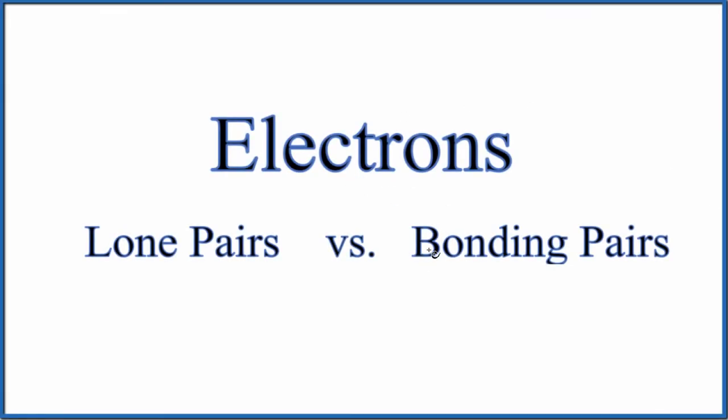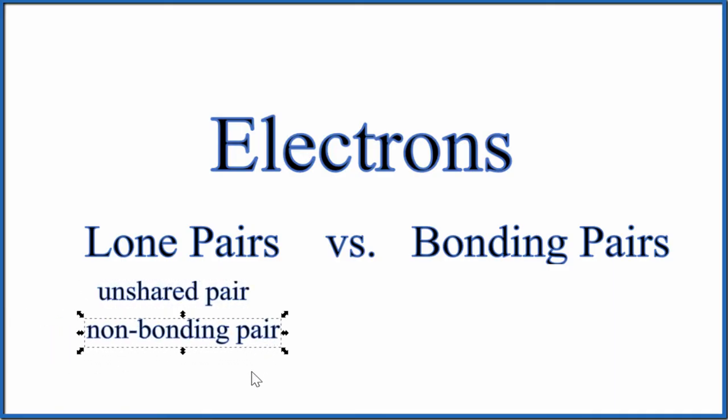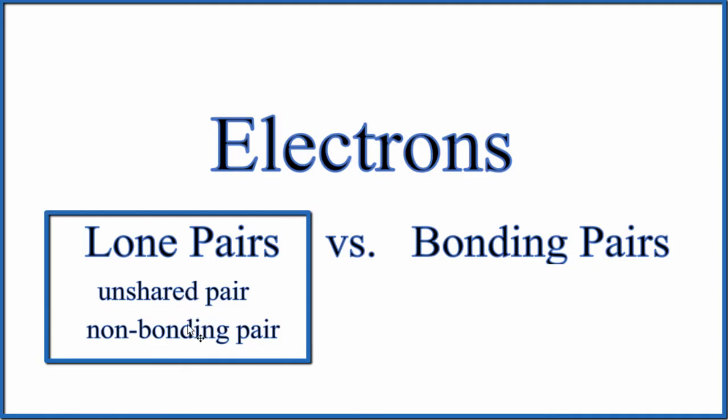In this video, we're going to take a look at the difference between lone pair electrons and bonding pair electrons. Note that sometimes lone pairs are called unshared pairs of electrons or non-bonding pairs. So these are all the same thing, just some different names.